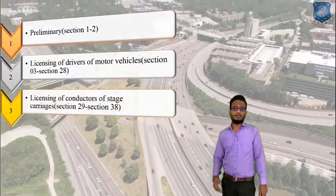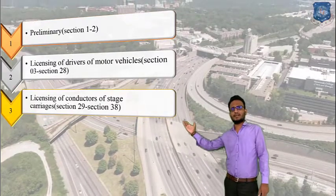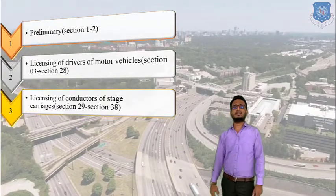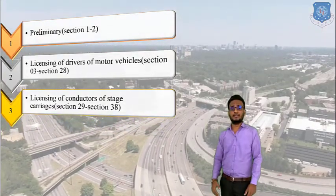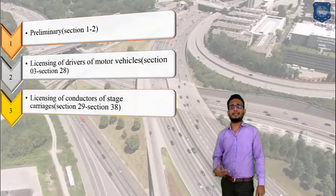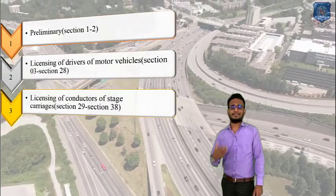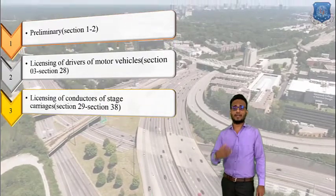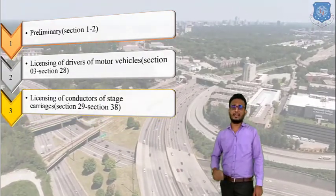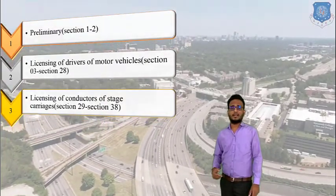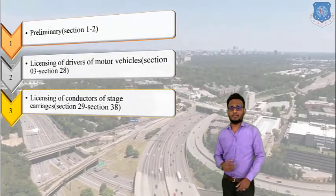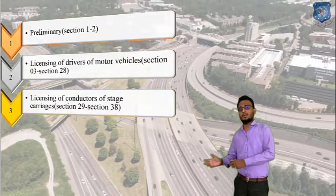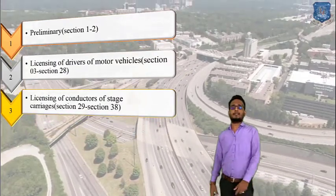Chapter number 3 belongs to the licensing of conductors of stage carriages. This particular chapter contains section 29 to section 38, covering the basic criteria for conductors to obtain a conductor's license, minimum educational qualifications, and the basic criteria for conductors to get a job.